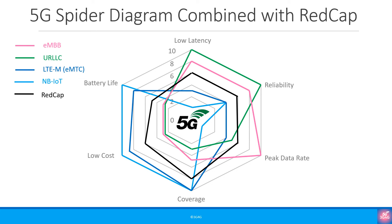Drawing a spider diagram for REDCap devices: they support reasonably low latency, reasonable reliability, a reasonable peak data rate, and have no requirement for very high coverage. The devices would be reasonably low cost, but battery life won't be as good as other LPWA devices. Putting all spider diagrams together, you can see why the industry feels that existing eMBB, URLLC, and MMTC devices cannot meet all 5G use cases, creating a need for an in-between category. This has been studied for Release 17 and is now part of the specifications.